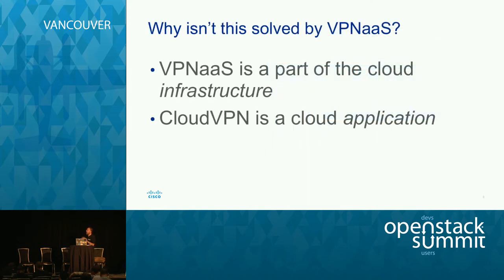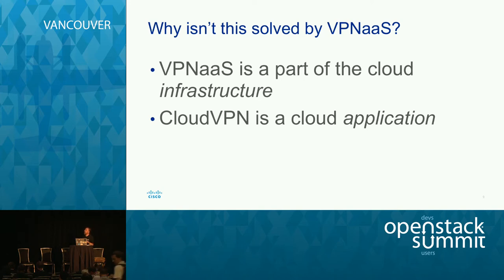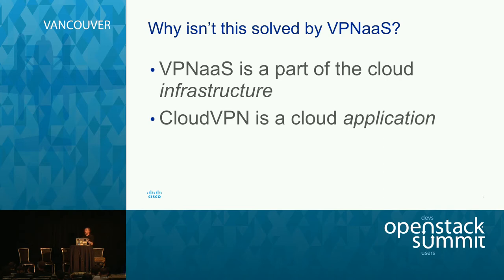An obvious question for anyone who's used OpenStack is: why isn't this solved by VPN-as-a-Service in OpenStack? It's a slightly different use case. VPN-as-a-Service is part of the cloud infrastructure — you're offering a service to cloud tenants who log into that cloud. For cloud VPN, firstly you're coordinating something in the cloud and something outside it; and secondly, you're not talking to cloud tenants — you're talking to customers of a service provider. Think of it more like Netflix: they use a cloud to run an application, but they're not reselling the cloud — they're delivering a service directly to end users.